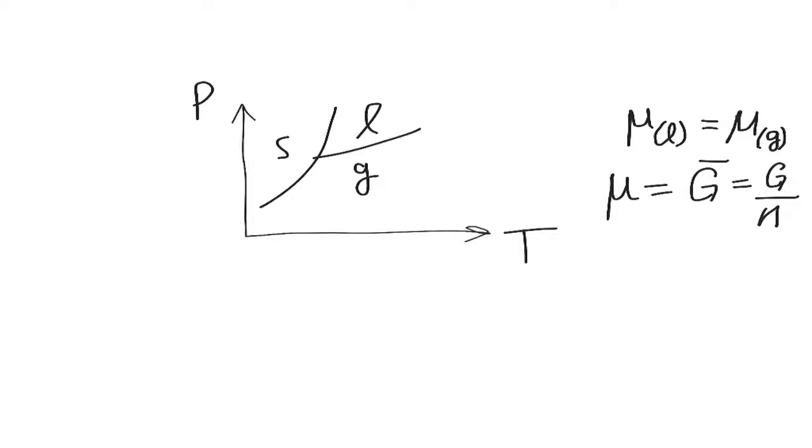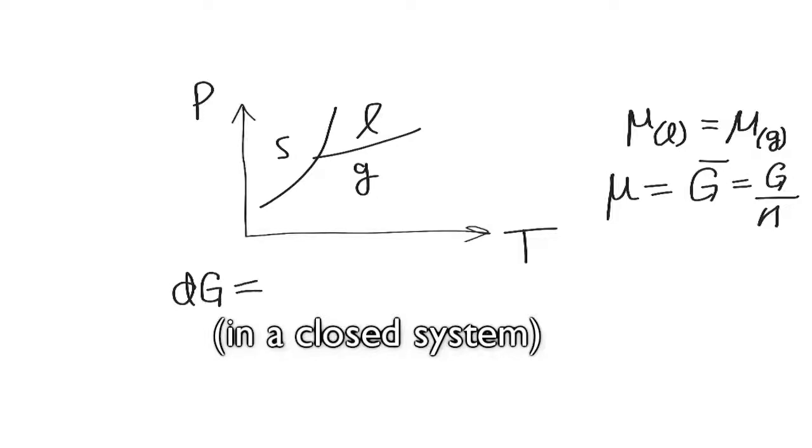Now the Gibbs free energy has a Maxwell relation. So the Gibbs free energy, as a function of temperature and pressure as its natural variables, is defined as dG equals negative SdT plus VdP.